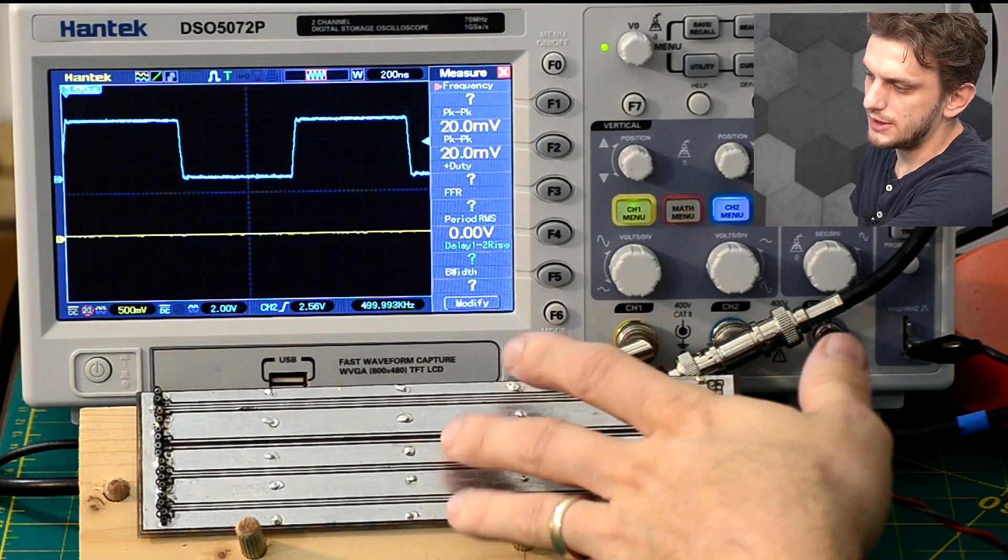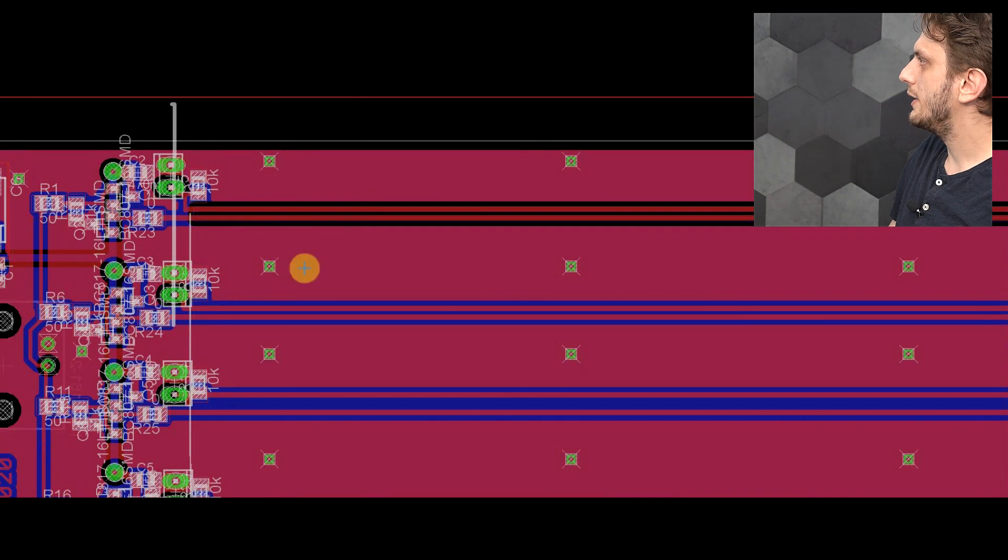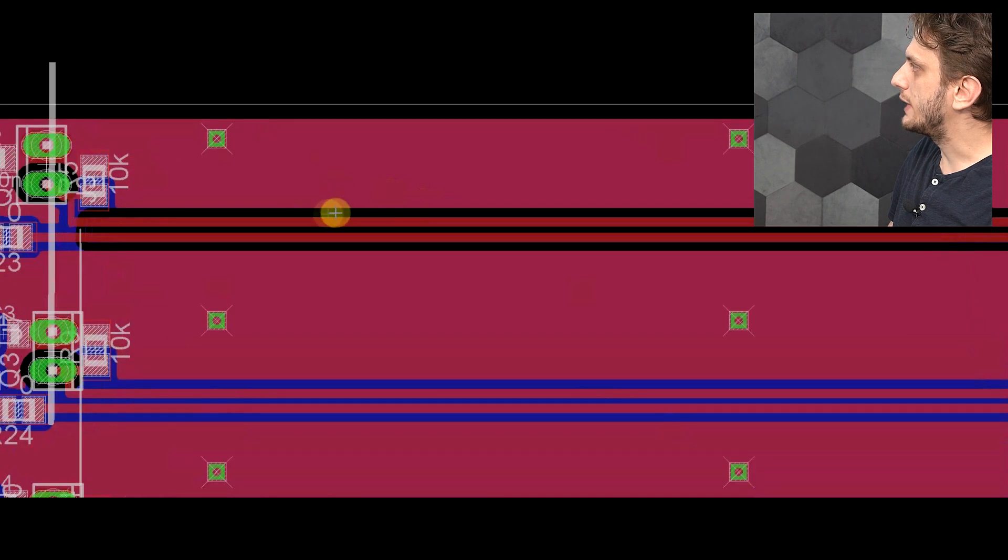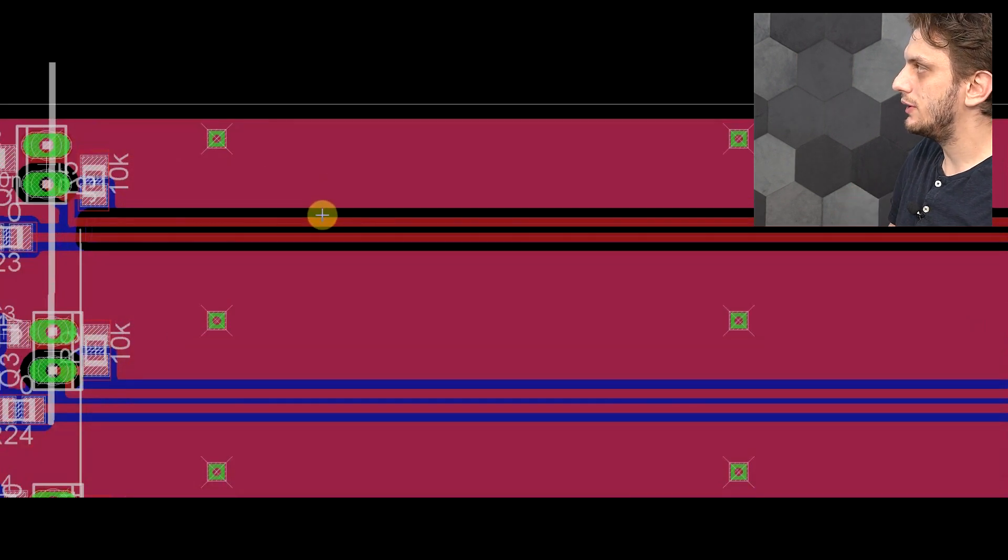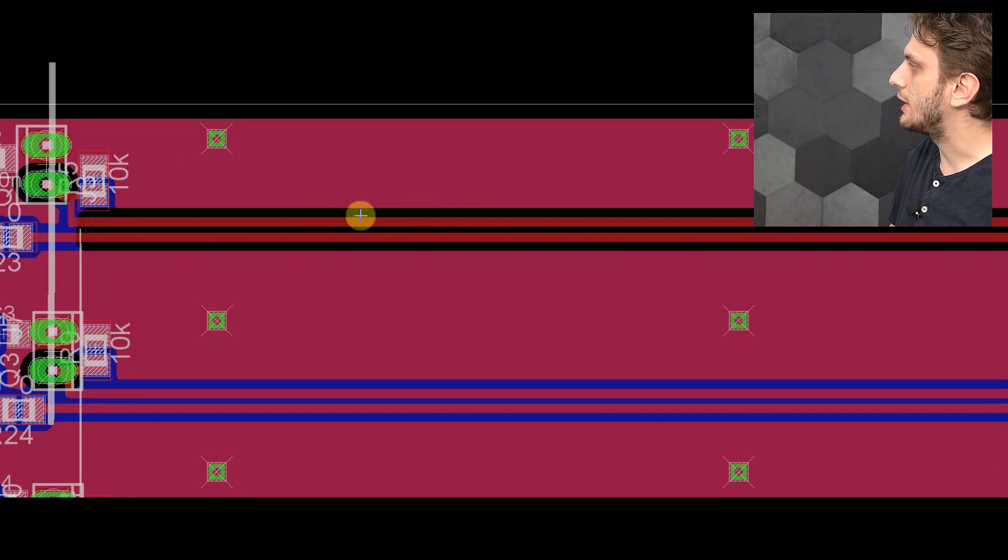So the difference between my first and second experiment can be best seen if we look at the actual layout of the board. So the first pair of lines that we looked at had a cutout in the ground on the other side. So this is a two layer board, and I simply made this cutout.